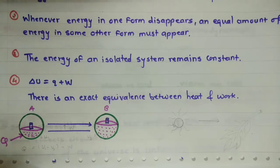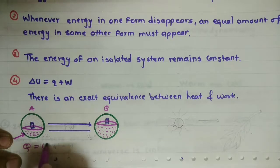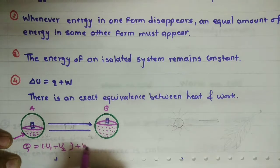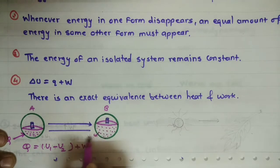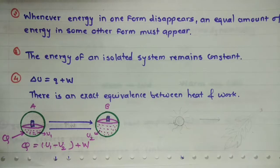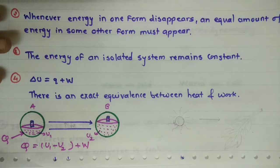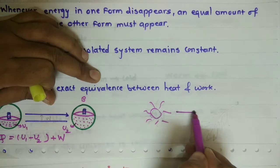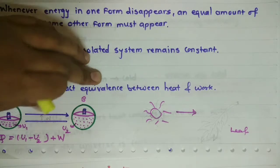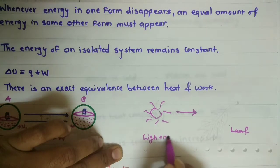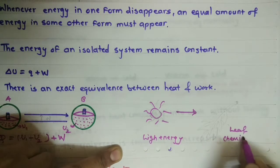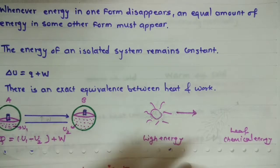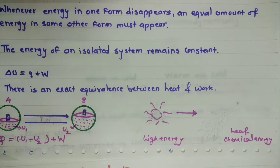The equation becomes Q = (U1 − U2) + W, where the internal energy goes on increasing in system B. Another example for the first law of thermodynamics: the sun provides light energy to a leaf, and that light energy is converted into chemical energy — meaning one form of energy is converted into another form. This is the actual statement of the first law of thermodynamics.